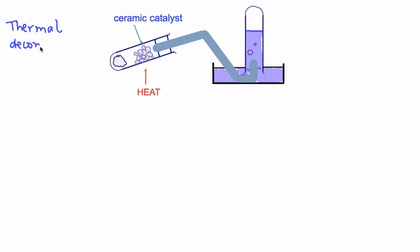We take some wire wool, dip that in our long chain hydrocarbon which is in liquid form, and heat the ceramic catalyst. The ceramic catalyst needs to be nice and hot for this reaction to happen.